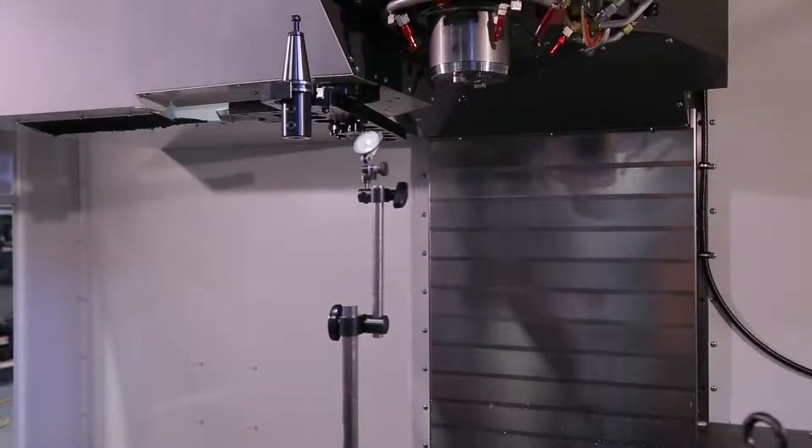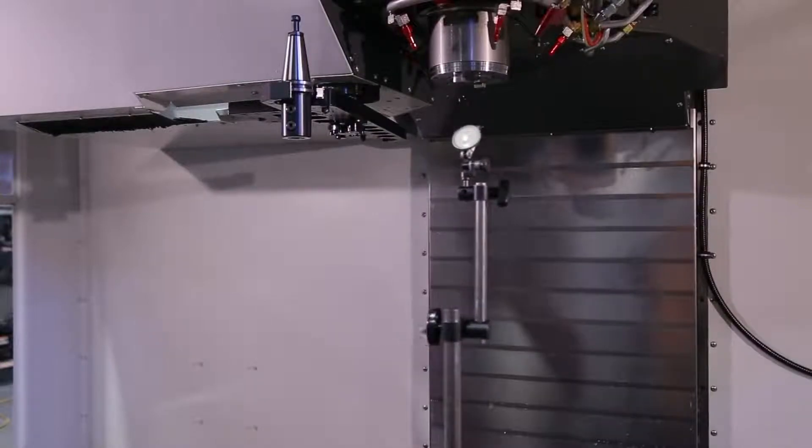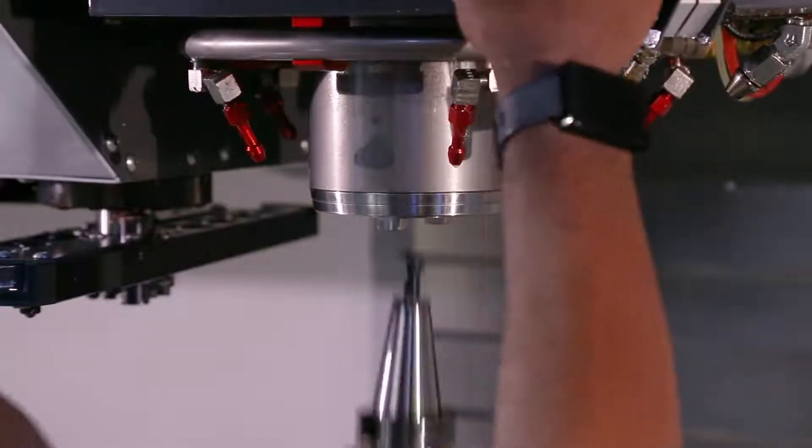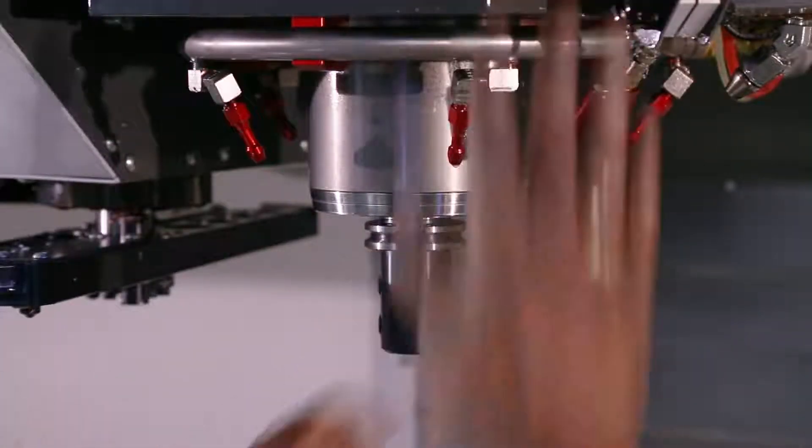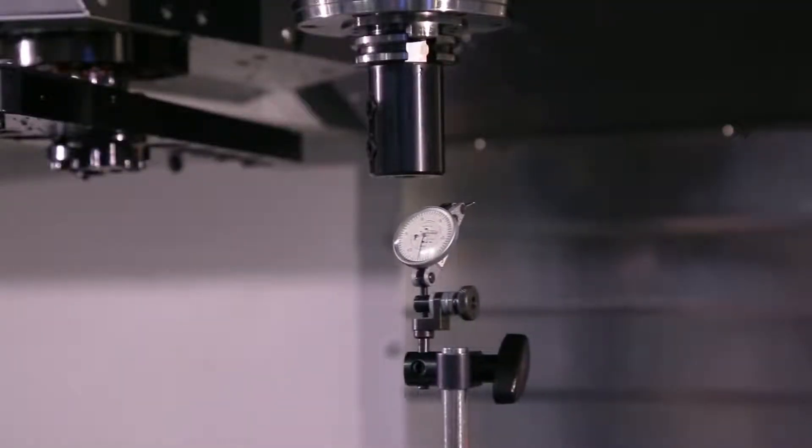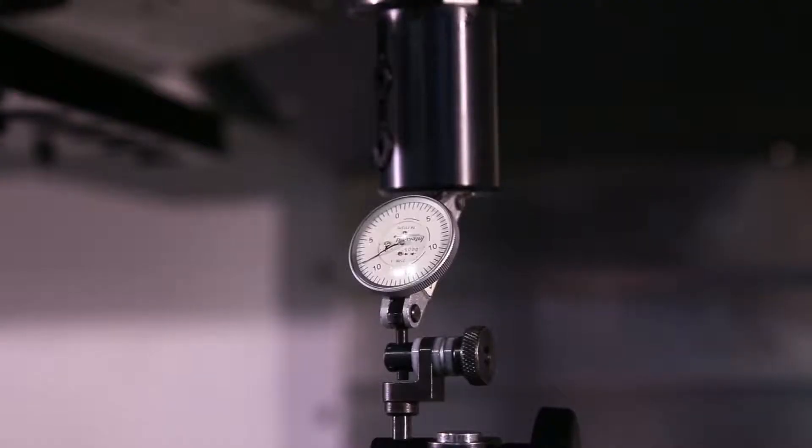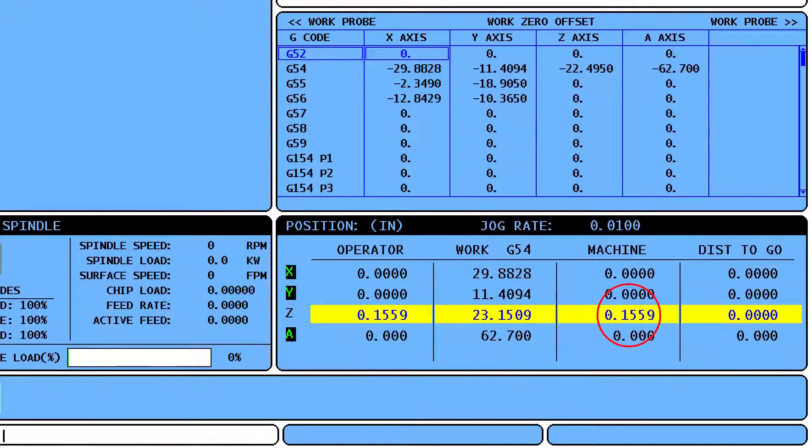Jog the X axis away from the double arm towards the spindle without moving the indicator. Remove the tool holder from the double arm and insert it in the spindle. Jog X directly under the spindle. Then jog the Z down until the tool holder touches the indicator, bringing it back to the same zero position. Record the machine's zero position value.